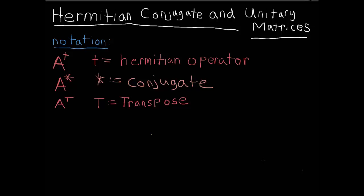Greetings friends. Here we will introduce the Hermitian conjugate and the notion of a unitary matrix. I will be using the following notation: for the Hermitian conjugate I will use a dagger, for conjugation I will use an asterisk, and for transpose I will use a capital T. There are various ways of notation that people use, so if you are new to this material, that may be a source of frustration across different platforms — be sure to know your method of communication.